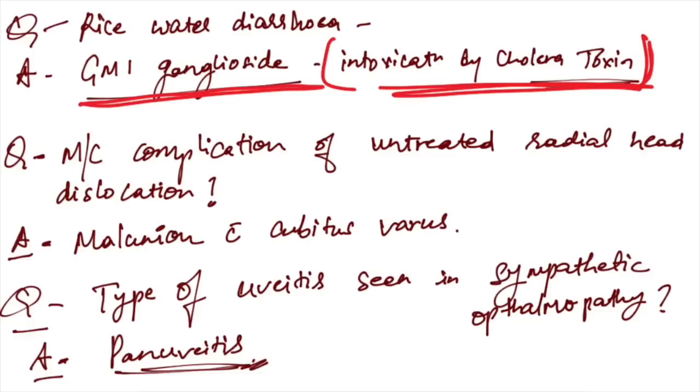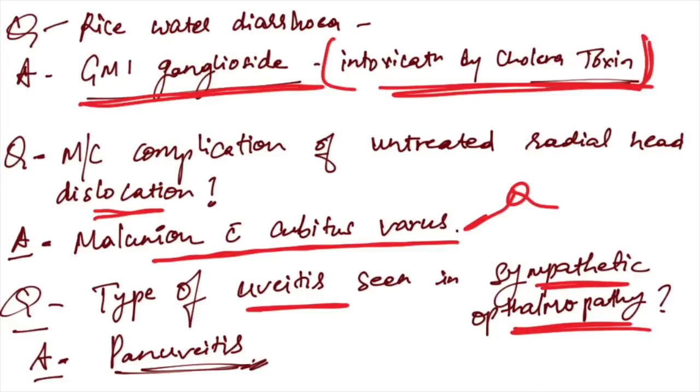Most common complication of untreated radial head dislocation: malunion with cubitus varus. This is very important and frequently asked. Type of uveitis seen in sympathetic ophthalmopathy: not anterior, not posterior. Panuveitis is seen. The options were anterior, posterior, pan. So panuveitis is seen.